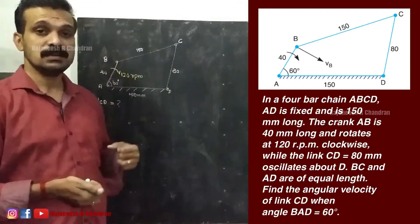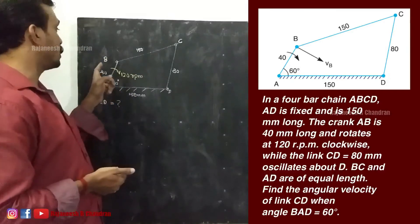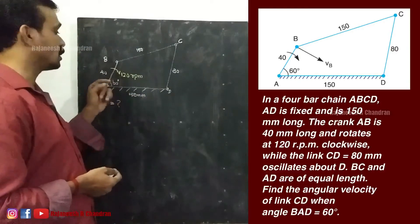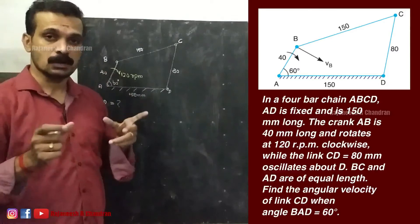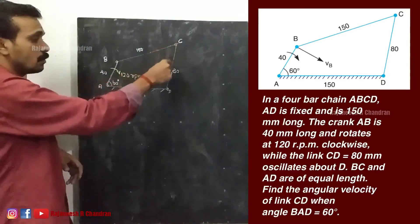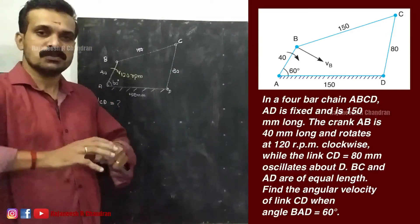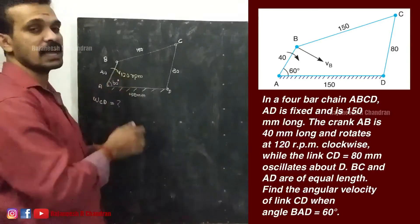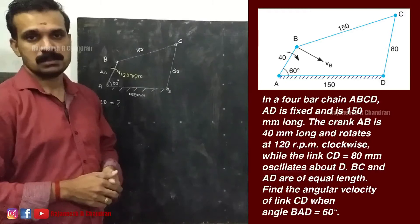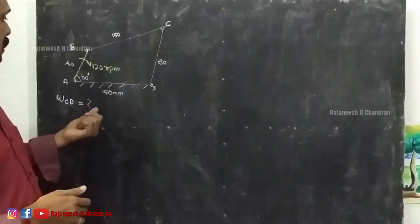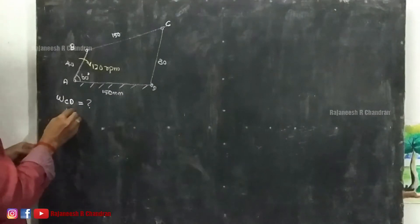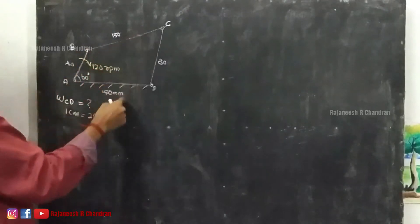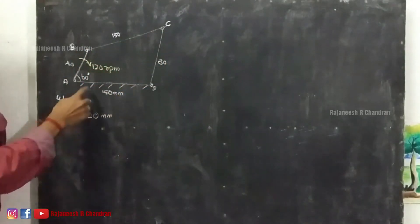A 4-bar mechanism A-B-C-D: the dimensions are — AB = 40 mm, BC = 150 mm, CD = 80 mm, and the fixed link AD = 150 mm. The crank AB is rotating at 120 RPM in the clockwise direction. We have to calculate the angular velocity of the link CD. The first step is to draw the position diagram of the mechanism using a suitable scale. We can take a scale of 1 cm = 20 mm, so AB = 2 cm, BC = 7.5 cm, CD = 4 cm, AD = 7.5 cm, and the crank angle is 60 degrees.